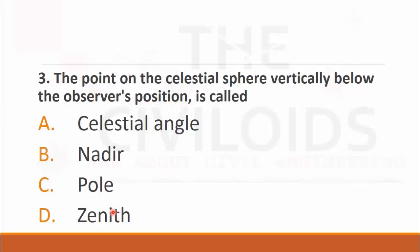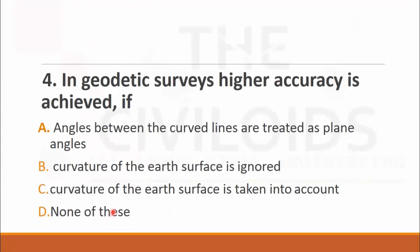MCQ number four: In geodetic surveys, higher accuracy is achieved if. The choices are: A. angles between curved lines are treated as plane angles, B. curvature of the earth is ignored, C. curvature of earth surface is taken into account, and D. none of these. It is clear that in geodetic survey we take curvature of the earth, so the right choice is C. curvature of the earth surface is taken into account.